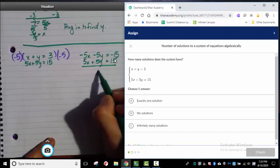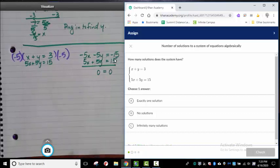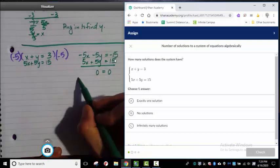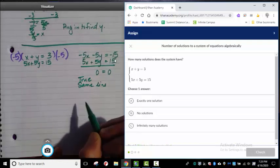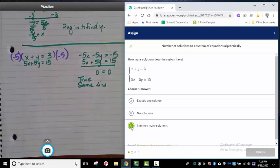And I notice that when I add these, everything cancels out. This is a true statement here. So I know that these are the same line. Which means we're going to have infinite solutions. And that's what I'll choose right here.